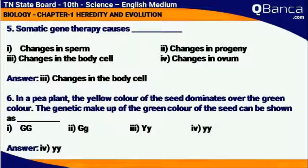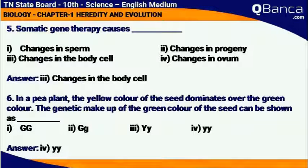In a pea plant, the yellow color of the seed dominates over the green color. The genetic makeup of the green color of the seed can be shown as yy (small y, small y).